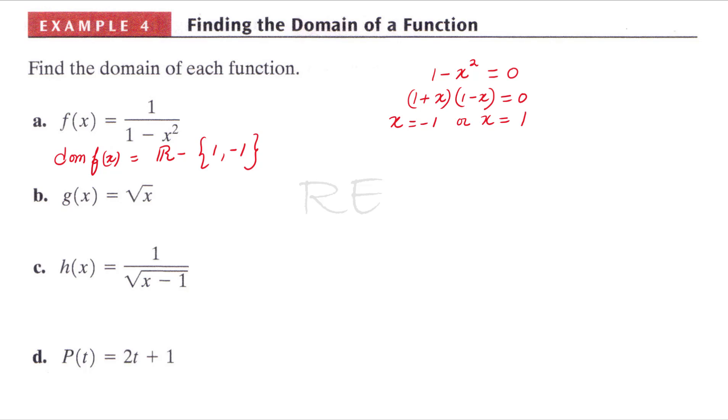For g(x) equals square root of x, the radicand must be greater than or equal to 0 for the function to exist. So the domain for g(x) is the set of all x such that x is greater than or equal to 0.